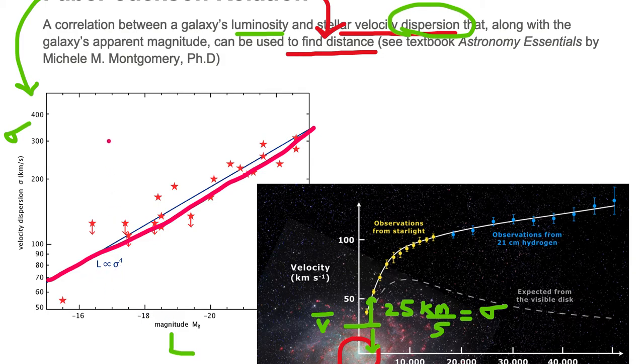And that relationship is luminosity is proportional to the dispersion to the fourth power. It's a power law relationship.